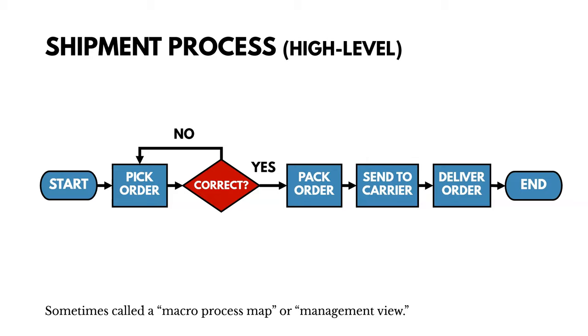If it is correct, we move forward, we pack that order, we send it to the carrier, and then we deliver it. And then it ends at that point. Now, this high-level process flow is sometimes called a macro process map or a management view.